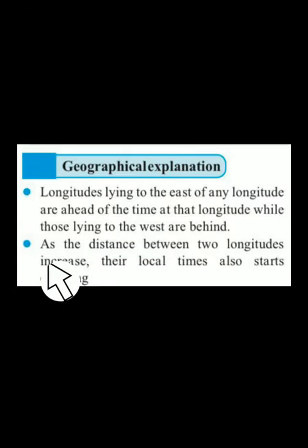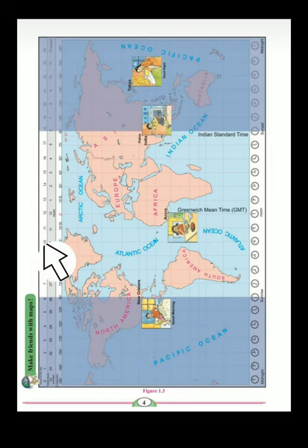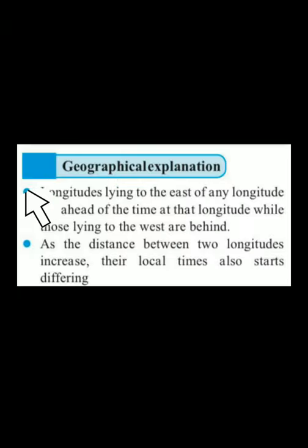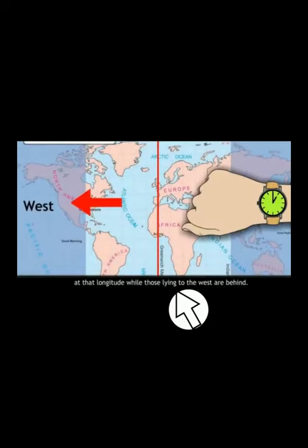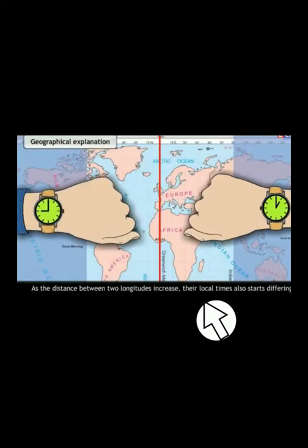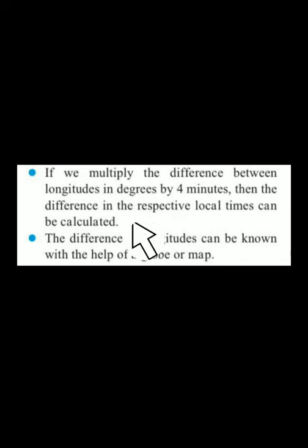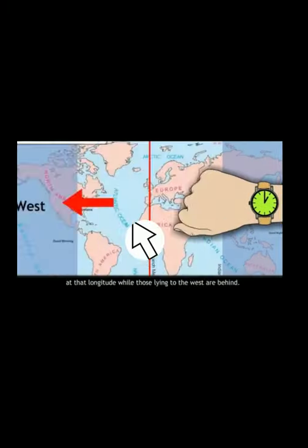As the distance between two longitudes increases, their local times also start differing. As you change your longitude, your time also changes. Moving east, you go ahead of time; moving west, you go behind time. If you multiply the difference between longitudes in degrees by four minutes, the difference in their respective local times can be calculated.